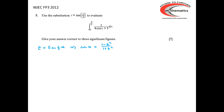We've been told to use t equals tan(½x) as a substitution. The formula booklet tells us that cos x is (1 minus t²) over (1 plus t²). If t is tan(½x), then we can rewrite that as x equals 2 tan⁻¹(t), so dx/dt is 2 over (1 plus t²). So we can replace dx by 2 over (1 plus t²) dt.